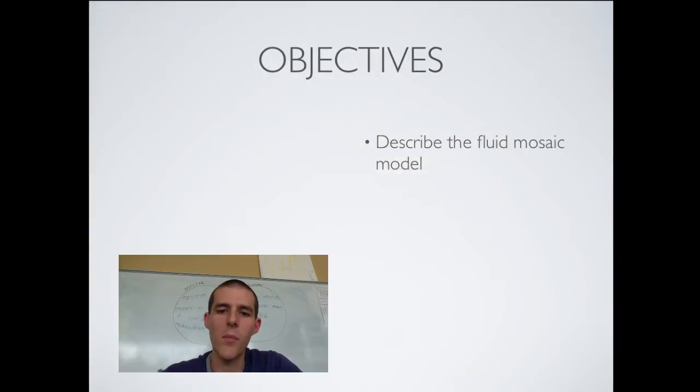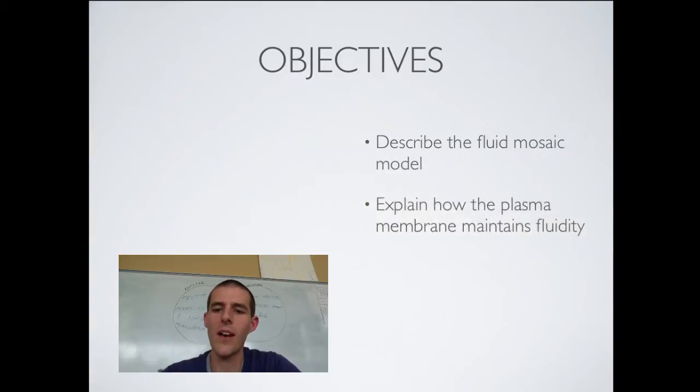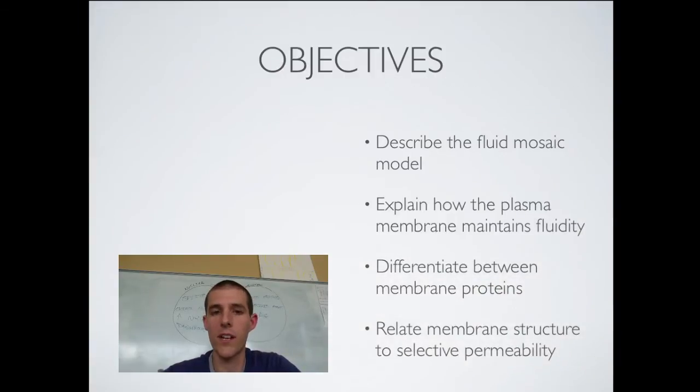First of all, describe the fluid mosaic model. Second one is to explain how the plasma membrane maintains fluidity and differentiate between membrane proteins. Number four, relate membrane structure to selective permeability.